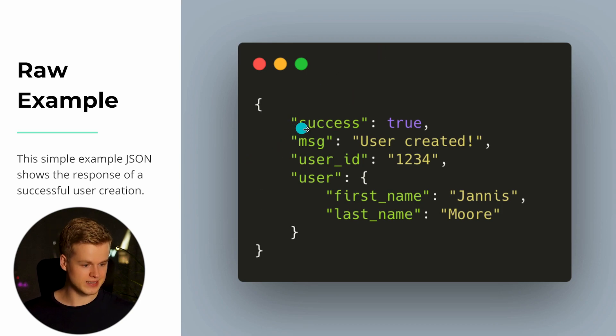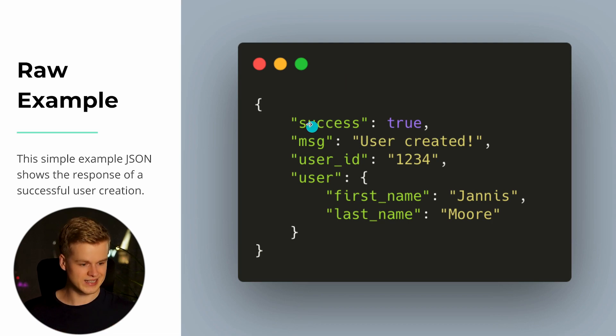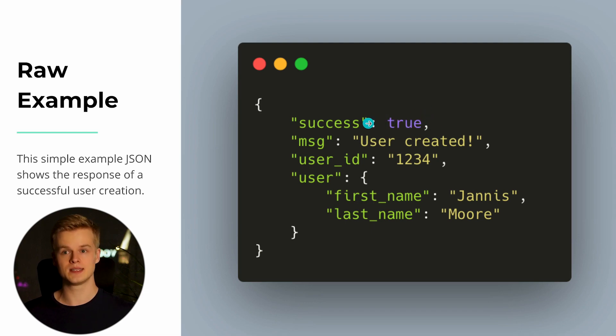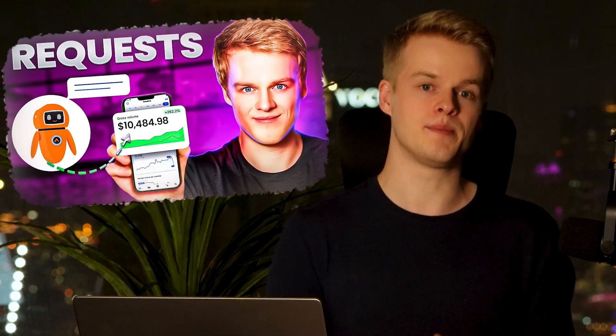As you can see on the screen, we have a 'success' key which basically defines something. Keys are used to define things unless it's an array of elements that don't need a specific definition. 'Success' basically means we are looking for a status — it is set to true, which means this specific request was successful. I made a tutorial about requests before, so check that video out to get a better understanding, since those mostly leverage JSON constructs.